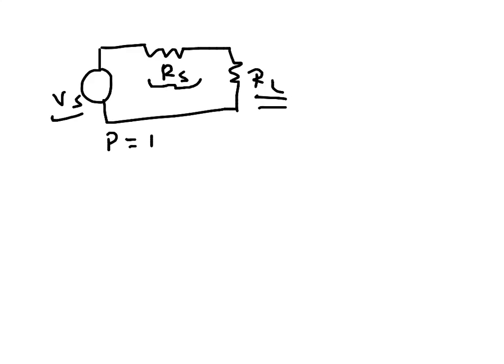So P is I squared RL and I is Vs over RS plus RL squared and then RL.